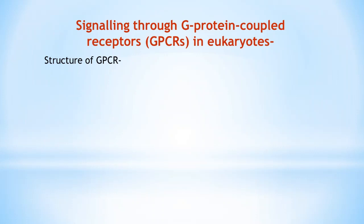G protein-coupled receptors are present in all eukaryotes and represent the largest family of cell surface receptors. They mediate most responses to signals from the external world as well as signals from other cells, such as hormones, neurotransmitters, and local mediators. Even the senses of sight, smell, and taste depend on GPCRs. There are more than 700 types of GPCRs in humans, with at least 831 human genes — about 4% of protein-coding genes — encoding G protein-coupled receptors.